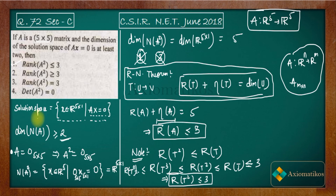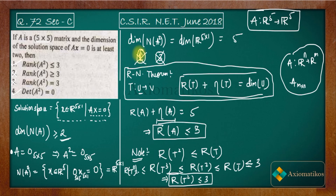So rank(A²) ≤ 3 is the correct option. Since the rank of A² is not full — it is less than 5 — there must be some zero eigenvalue. This means the determinant of A² is also zero. So option 1 (rank(A²) ≤ 3) and option 4 (det(A²) = 0) are both correct. Options 2 and 3 are incorrect.